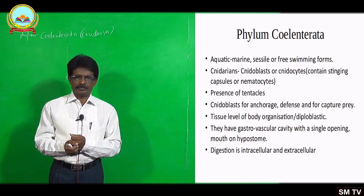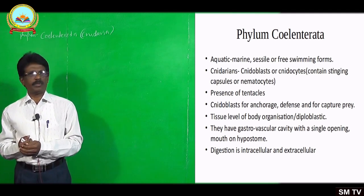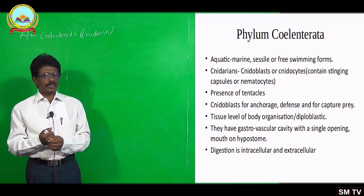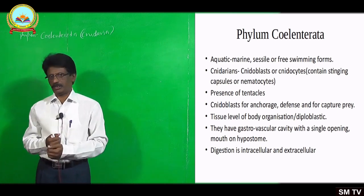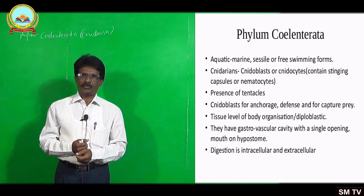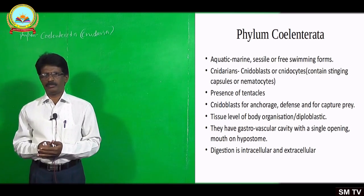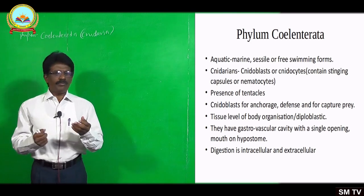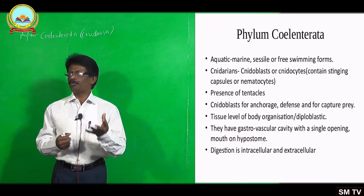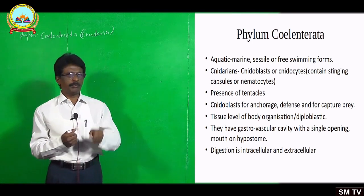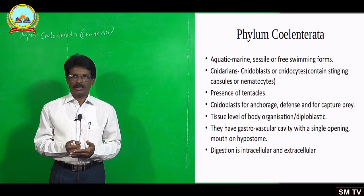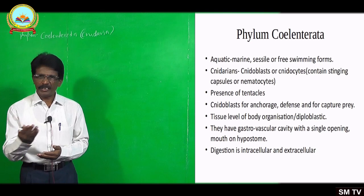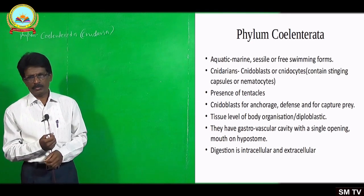They possess tentacles for movement or for capturing food materials. The cnidoblast cells or cnidocytes are meant for three functions: one is for anchorage — attachment to other organisms; again for defense mechanism; and for capturing prey. In free-swimming forms, they may capture prey using cnidoblast cells. Even in sessile animals, they are used for capturing prey along with the water current.